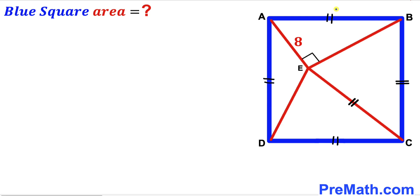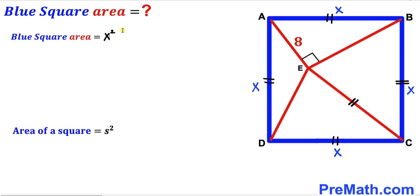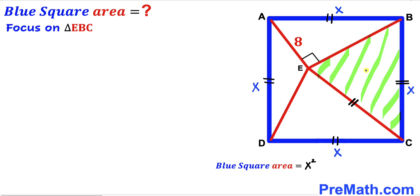I'll label the side length of this square as x, so all side lengths are x units. Since we want the area of square ABCD, recall the area formula: area equals s squared. With side length x, the blue square area equals x squared, and our task is to find x squared.